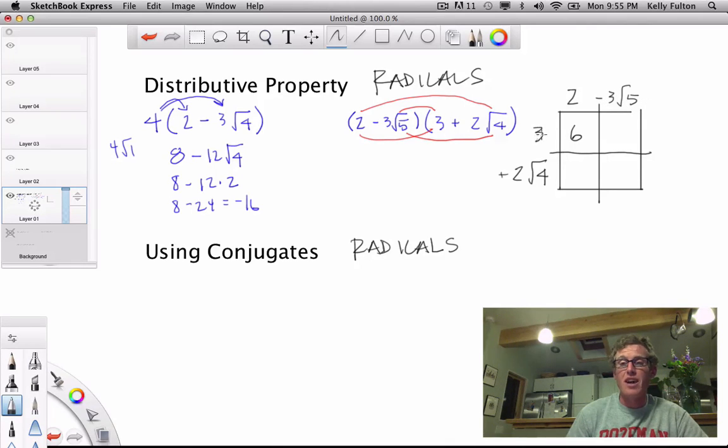And then 3 times negative 3 root 5. Remember we're going to do the outside numbers and then worry about the radicals or the radicands inside. That gives me negative 9 root 5. And then 2 times 2 root 4 is 4 root 4.